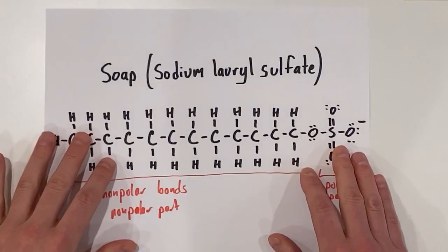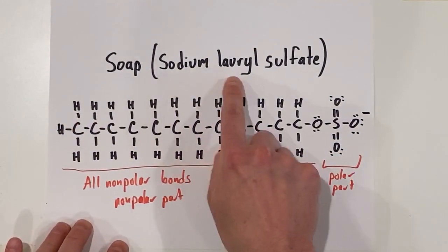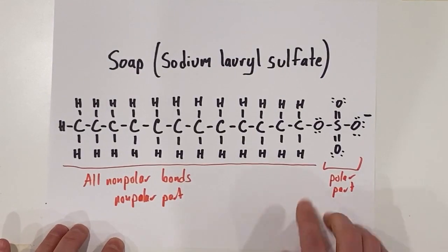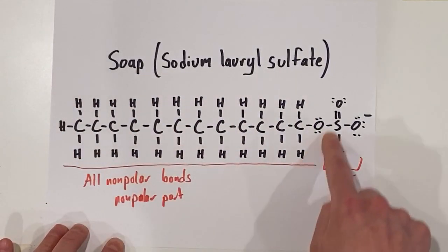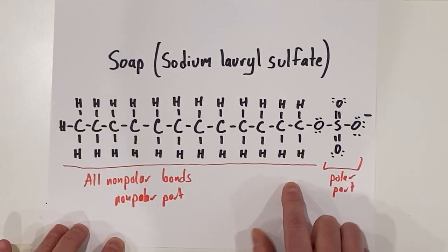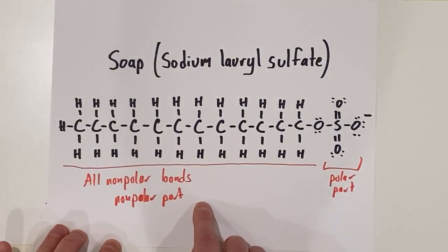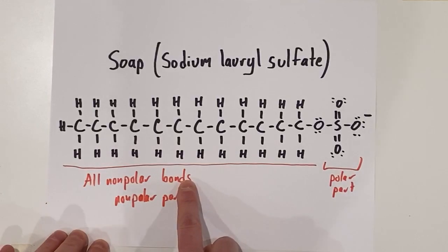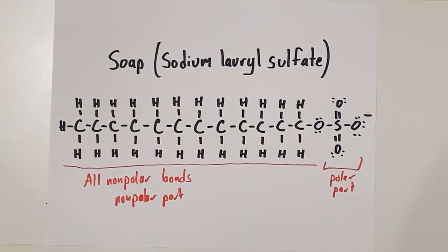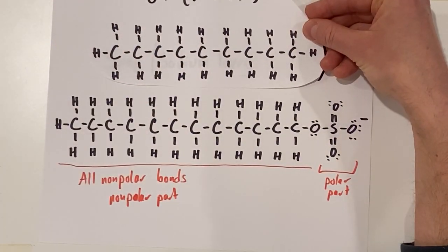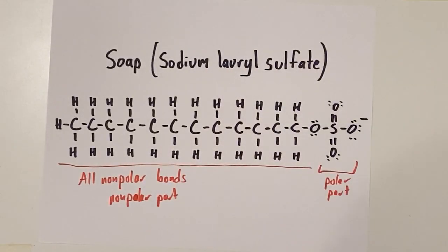The soap molecule that we're going to look at here is called sodium lauryl sulfate. We'll talk about this name in just a second. On one part of the molecule, this is called the tail end, we only have carbon and carbon-hydrogen bonds. So these are all non-polar bonds, just like in our mineral oil. This is the non-polar part of soap.